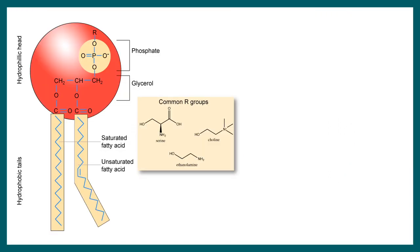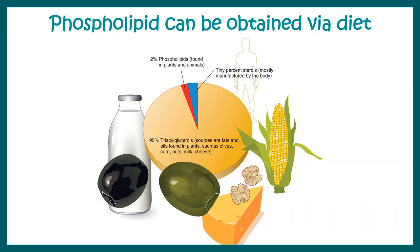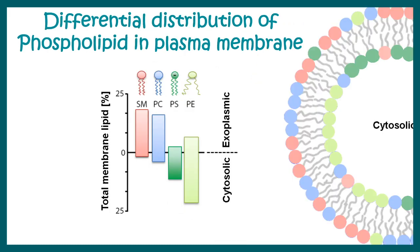The R part of the phospholipid can be different — it could be serine, choline, ethanolamine, or various other groups. These phospholipids can be obtained via diet, and many membrane phospholipids can also be synthesized in the body. The distribution of plasma phospholipids is heterogeneous: for example, sphingomyelin or phosphatidylcholine are generally present on the exoplasmic side, facing the outer part of the cell.